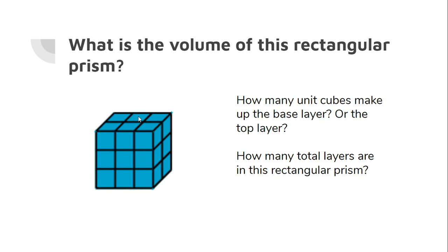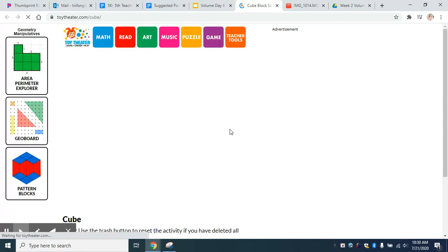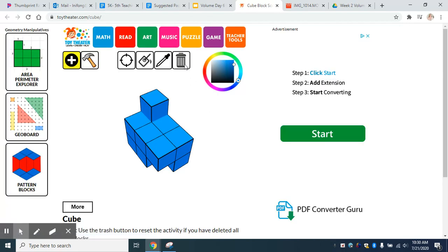So what if we're having kind of a hard time visualizing? Well there is an online resource you can use, toytheatre.com backslash cube. Your teacher can give you the link to this, and we can use this to create rectangular prisms.